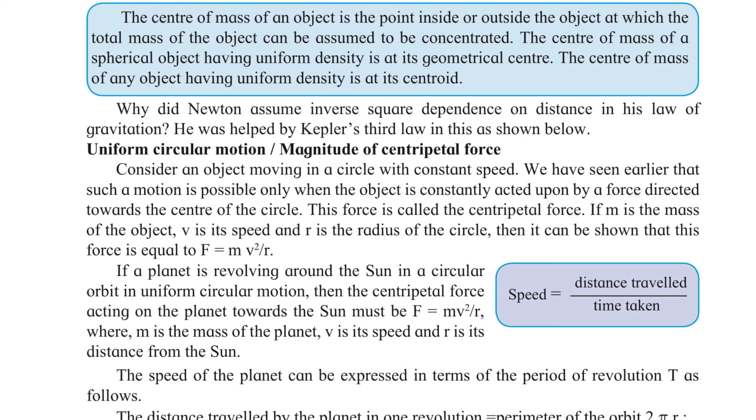Consider an object moving in a circle with constant speed. We have seen earlier that such a motion is possible when the object is constantly acted upon by a force directed towards the center of the circle. This force is called the centripetal force, and you have done the activity on it too.